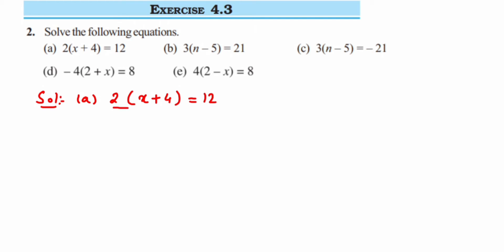Since there is no sign between 2 and the bracket, it means there is a multiplication. I am using the transpose method to solve here — you can use balancing method or transpose method. Whenever transposing a number from multiplication to the other side, it becomes division; similarly, division becomes multiplication, and addition and subtraction become their opposites.